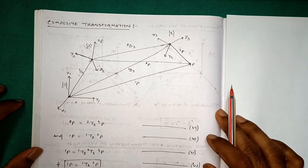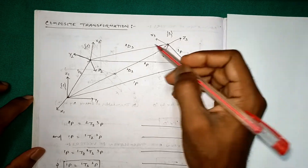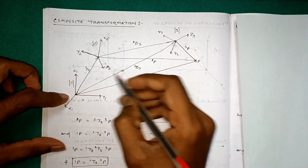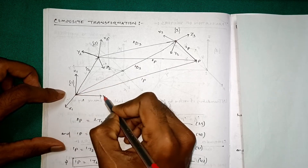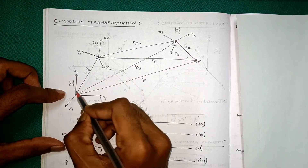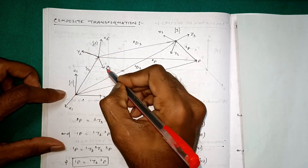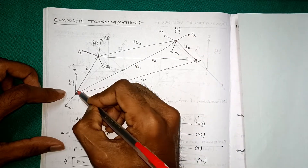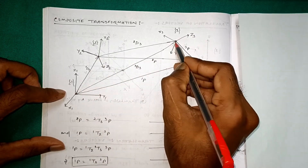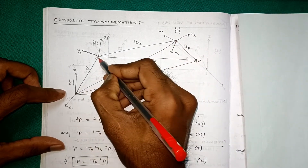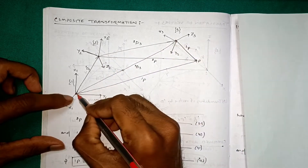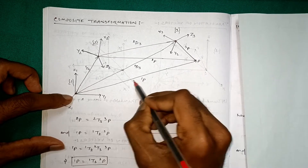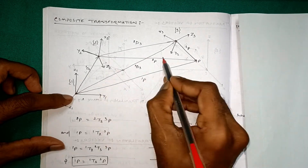Welcome to this lecture. We will see composite transformation. Here three origins are there. The first one is x1, y1, z1 — that is frame 1. This is frame 2: x2, y2, z2. This is frame 3: x3, y3, z3. The translation has been made two times, that is 1d2 and 2d3, so the final one is 1d3. This is the point p — this is 1p, this is 2p, and this is 3p.